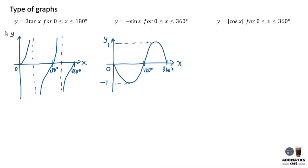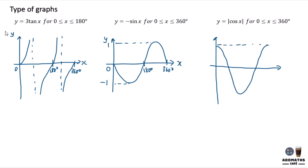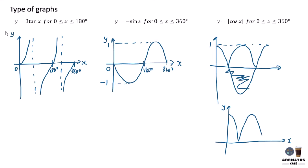Now you are required to sketch modulus of cos x — meaning you sketch cos x but without the negative values. The maximum is 1, but there's no negative here. So the negative part is reflected up and becomes positive. Your modulus cos x will go down and then goes up, and then goes up again. This will be your 1, this is your 0. This is 180 degrees and this is 360 degrees.